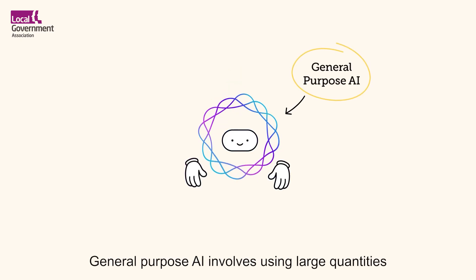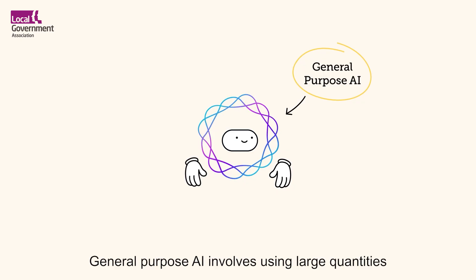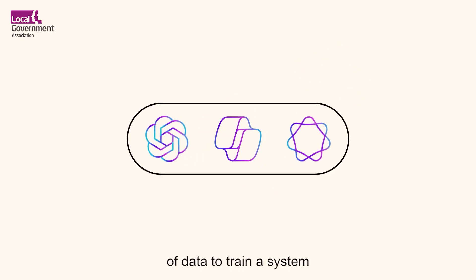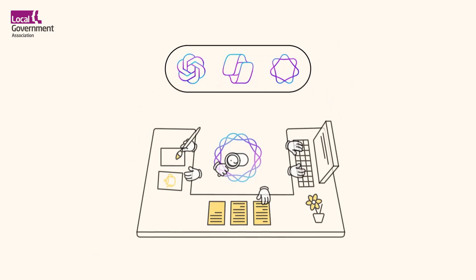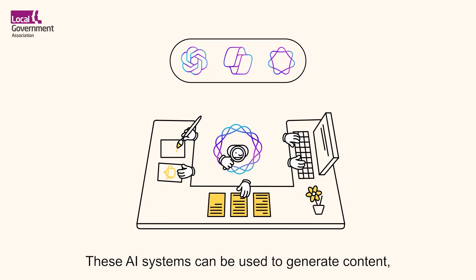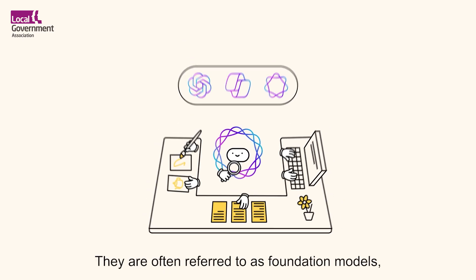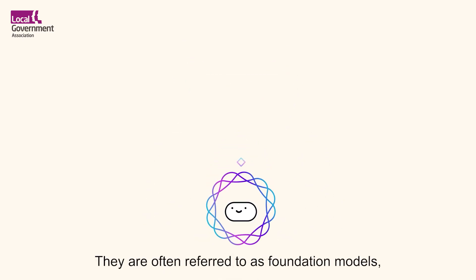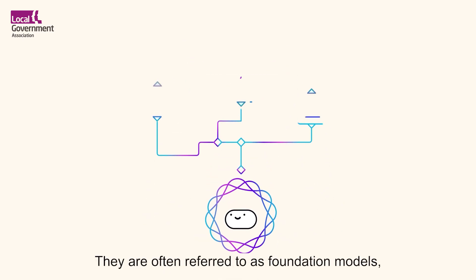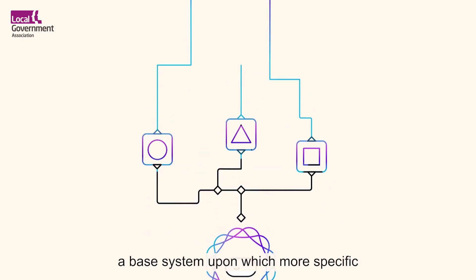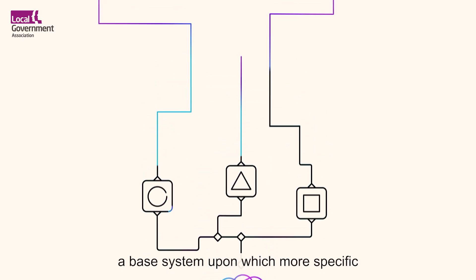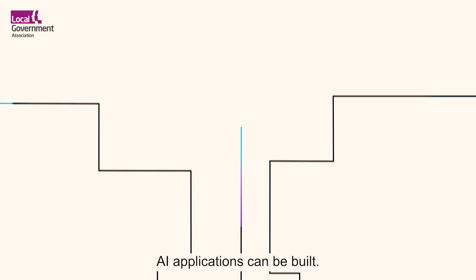General purpose AI involves using large quantities of data to train a system to perform a wide range of tasks. These AI systems can be used to generate content, translate languages, or answer queries. They are often referred to as foundation models because they can provide a base system upon which more specific AI applications can be built.